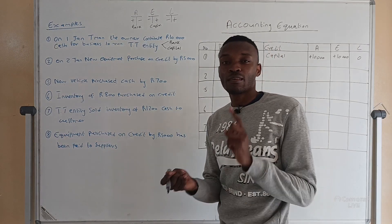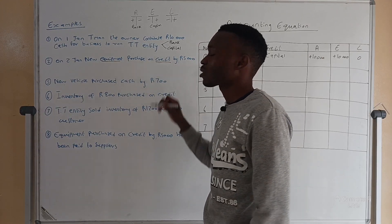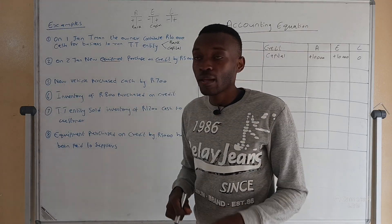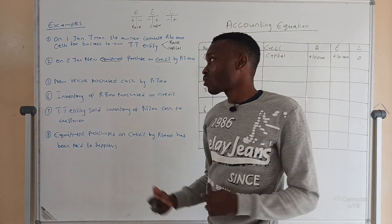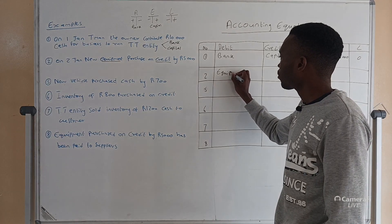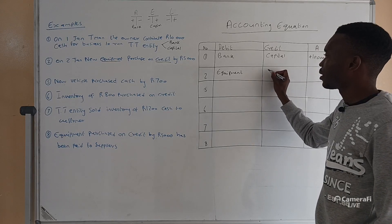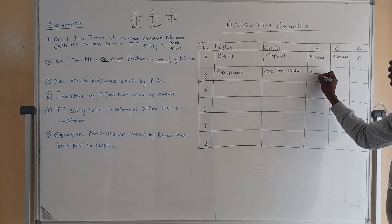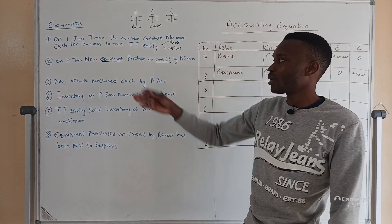Transaction number two: on 2 January, new equipment is purchased on credit for five thousand. The owner purchased equipment, so the first component is equipment, which is an asset. The second component is creditors control, because we didn't pay for this equipment — we purchased it on credit, so creditors control is a liability. We owe someone because we still have to pay this five thousand. Our assets increase — equipment is debited — and liability also increases because we have to pay that person later. Creditors control is credited. We record plus five thousand for assets and plus five thousand for liability. Equity is not affected.